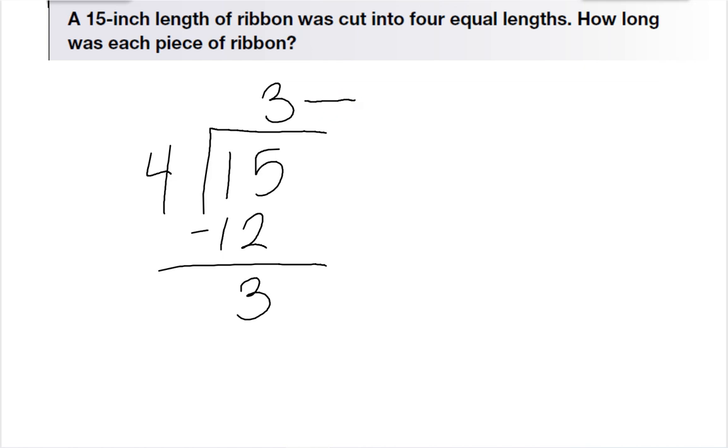So I add my fraction bar here, and then the numerator is my remainder. So that's 3. And the denominator is my divisor, or the number I'm dividing by, 4. So I can cut this ribbon into 4 equal pieces that are 3 and 3 fourths inches long.